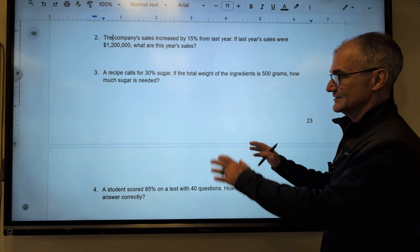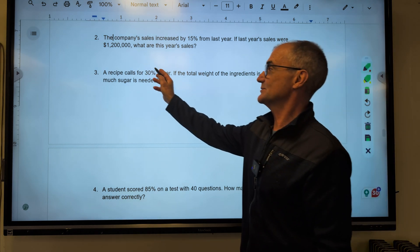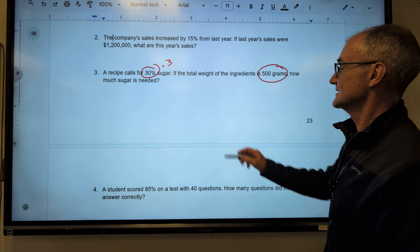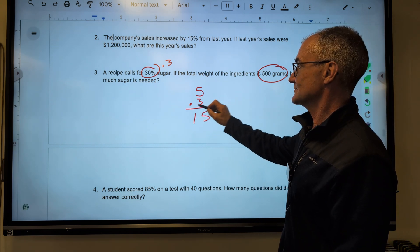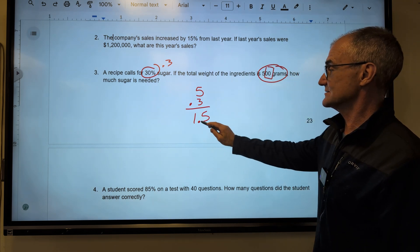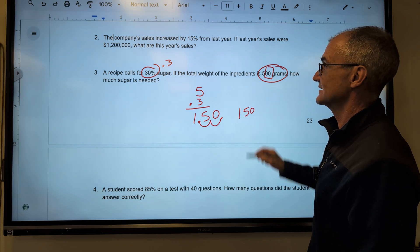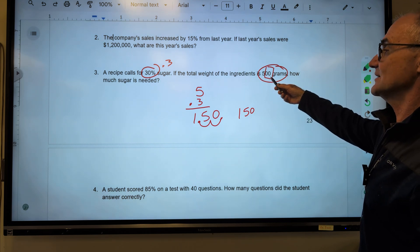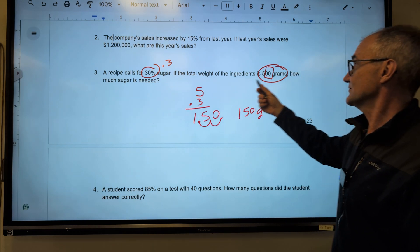All right, let me do one more practice problem. Again, there's a lot more practice problems here. If you have the book, you can work your way through, and I'll have answers in the back. A recipe calls for 30% sugar. That's 0.30. If the total weight of the ingredients is 500 grams, how much sugar is needed? That's going to be that 500 times that 0.3. It's going to multiply those two together. Give me 15. Decimal place is 1. I didn't do that 500. I did the 5, so I got two extra zeros here. I got to add those zeros on by going over 1, 2. Give me 150. So 150 is my answer here. Let me reread that and see if that makes sense. The recipe calls for 30% sugar by weight. If the total weight is 500, then I have 150 grams of sugar. And that kind of makes sense. It's about a third. So a third of that is 150 grams.